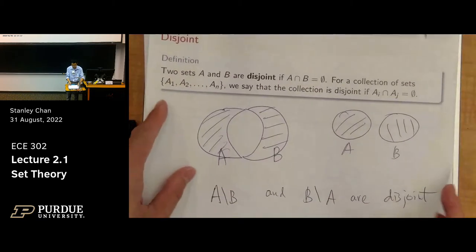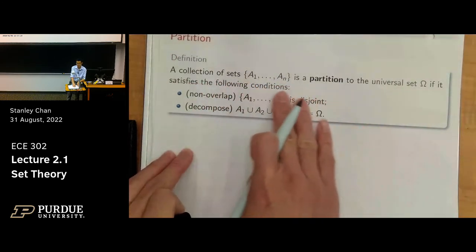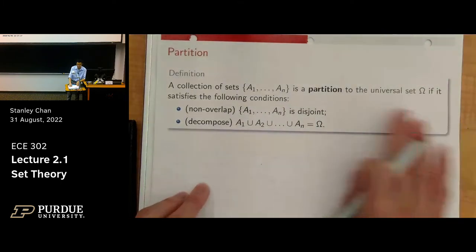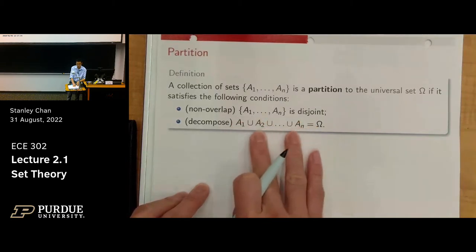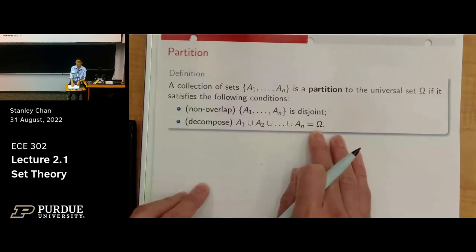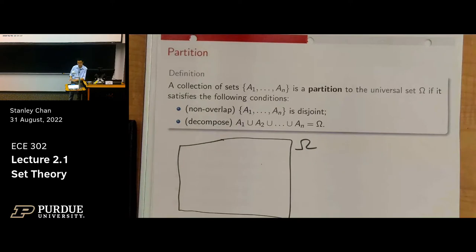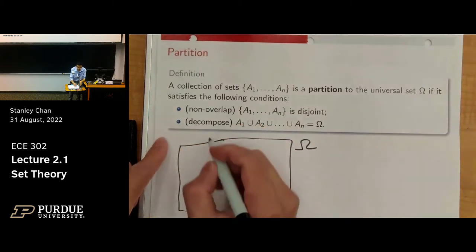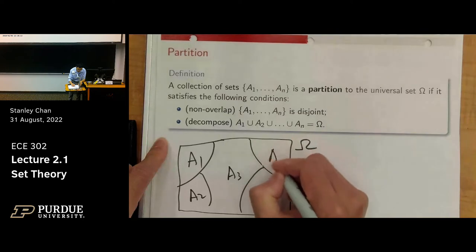Now let's talk about partition. Consider a sequence of sets A1 through An. We say that the sequence of sets forms a partition of the universal set omega if two criteria are satisfied: number one, each individual set is disjoint with each other, and number two, if you take the union of everyone you get the universal set. Let's draw omega first — you decompose omega into many small sets, A1 through An.